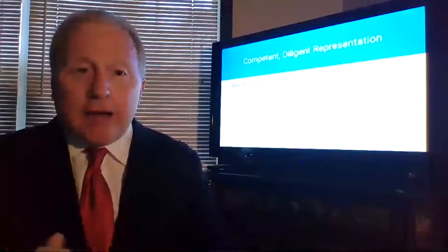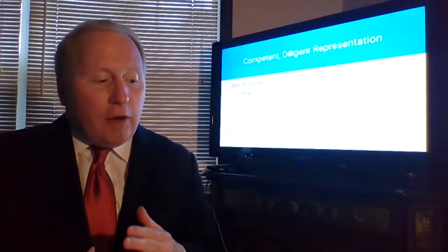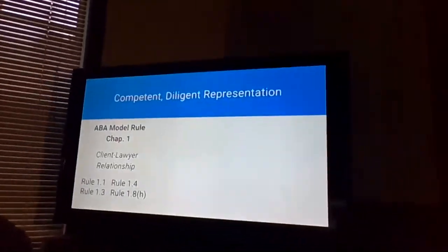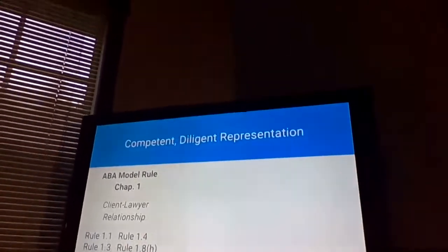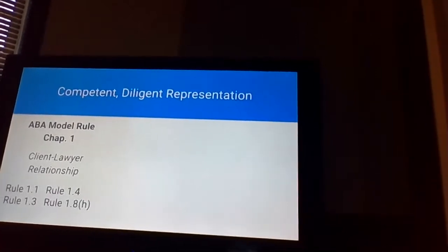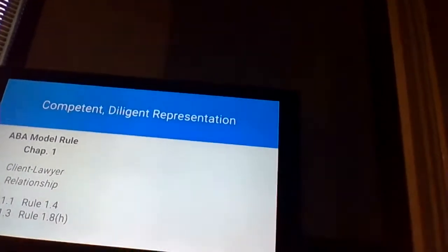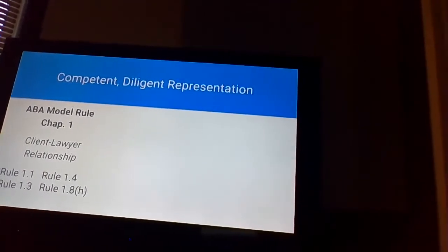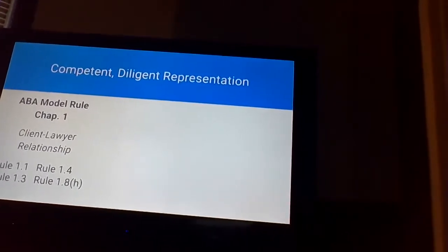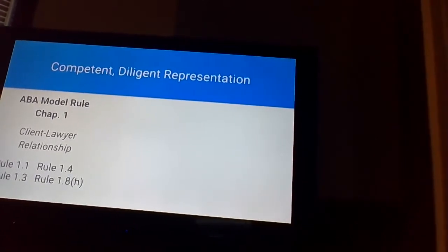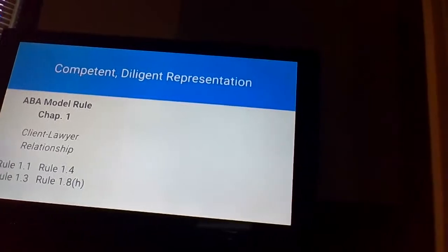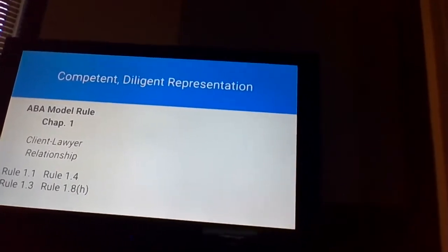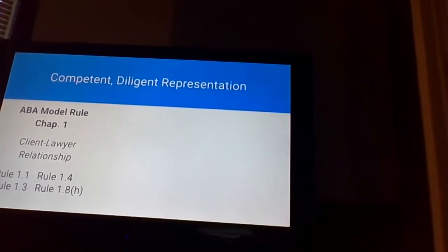What exactly will we be covering today? We'll be looking at four different rules from chapter one, which talks about the client-lawyer relationship. One of those rules is Rule 1.1, which talks about competence. We'll also be looking at Rule 1.3, which talks about diligence. Rule 1.4 talks about communications, and when it comes to competence and diligence, you really can't get there without adequate communication. And we're going to cover a good chunk of Rule 1.8, focusing mostly on subsection H.